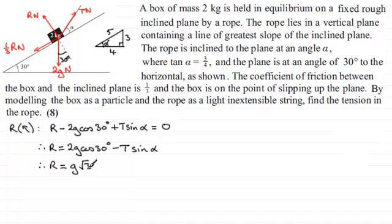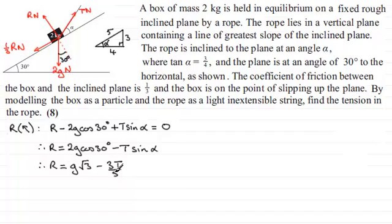I'll keep it in exact form. From our 3-4-5 triangle, sin alpha equals opposite over hypotenuse, which is 3 fifths. So we have R = g root 3 − 3T over 5. We'll call this equation 1.